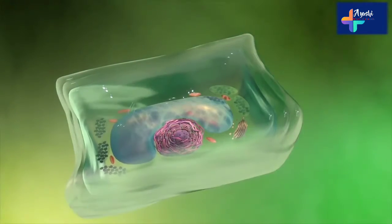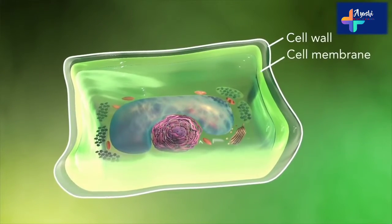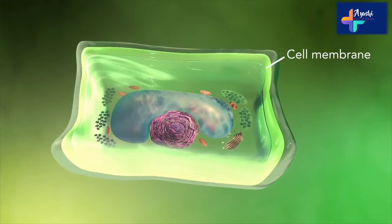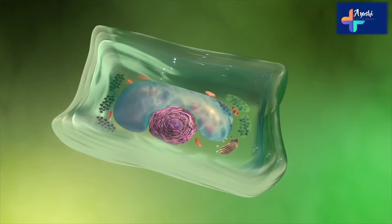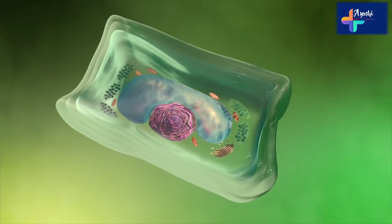Plant cells also have a cell wall outside of their cell membranes that shape, support, and protect the plant cell. Animal cells never have a cell wall.